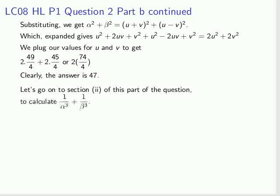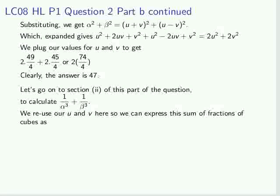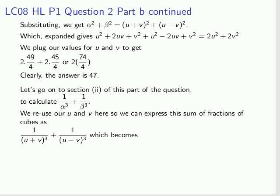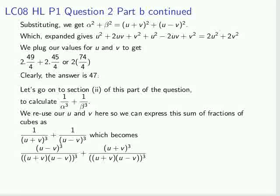Now, section 2 of this part of the question is a bit more complicated. We have to get 1 over the cube of alpha and 1 over the cube of beta and add them. We can reuse our u and v here. And we see that it could become quite complicated, especially when we expand it out. What we've done here is multiply above and below of those two fractions by the denominator of the other fraction. It should be fairly clear-cut what has to be done in order to manipulate the numerators.